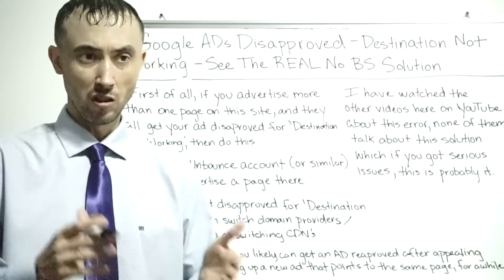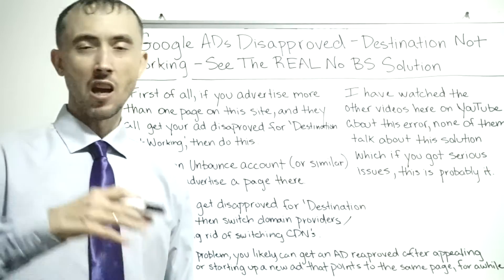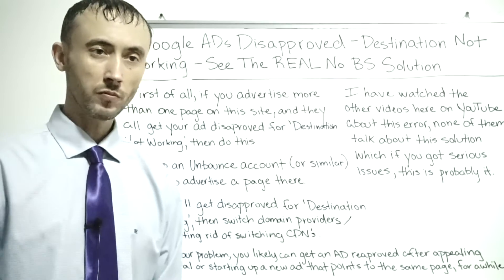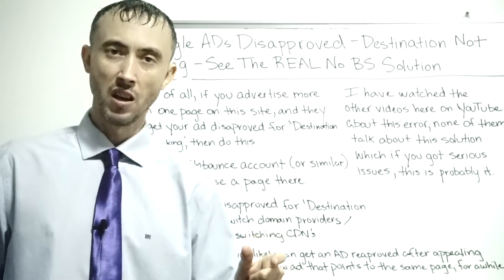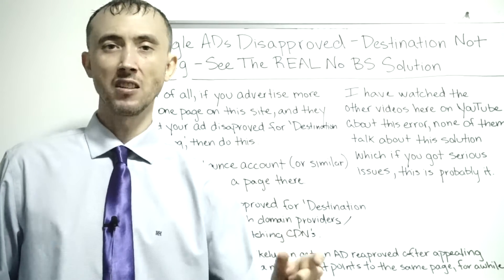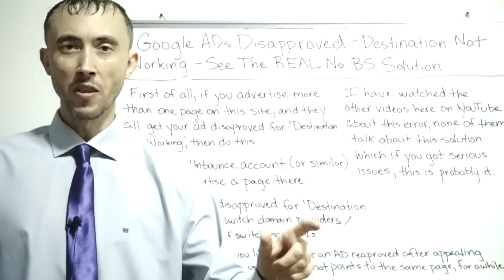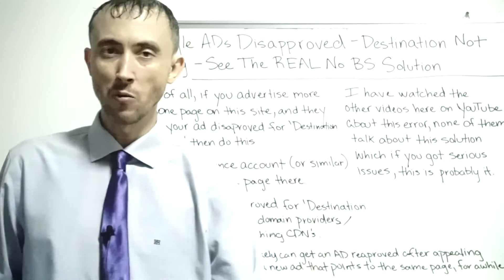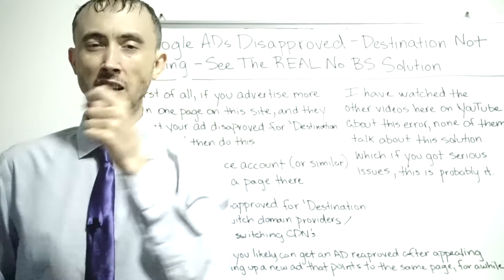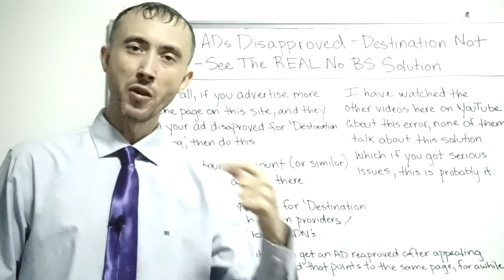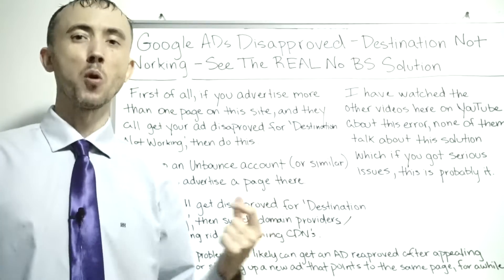The confusing part is you check the page yourself and it loads fine. You appeal, it gets approved, two weeks later it's disapproved again, and again the page looks fine to you. The reality is it's intermittently not resolving at the domain registrar level — at the DNS level. When Google's system tries to access your site, the domain registrar isn't resolving the address location of your web hosting, so the user's browser can't download your website files.